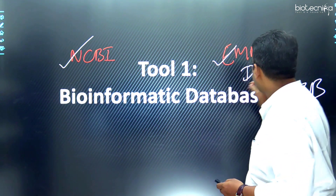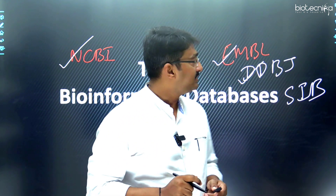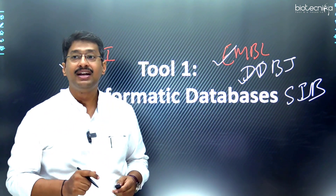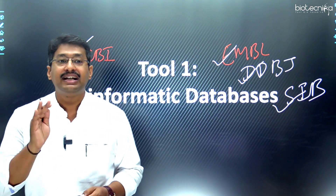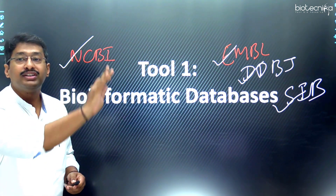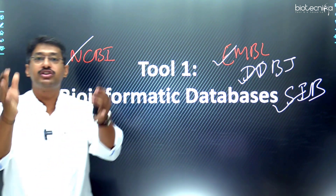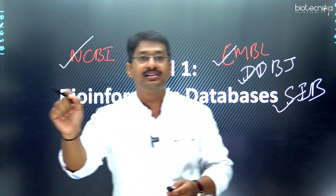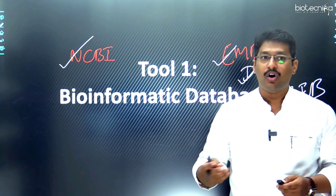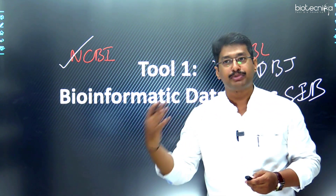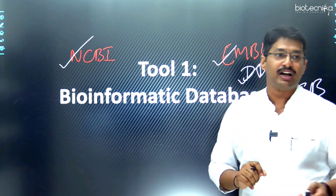DDBJ is a Japanese database standing for DNA Data Bank of Japan, and SIB stands for Swiss Institute of Bioinformatics. The intention of these databases is to serve as an information resource or repository where you can get huge information on genes, proteins, transcription factors, promoters — everything is available on these particular tools.